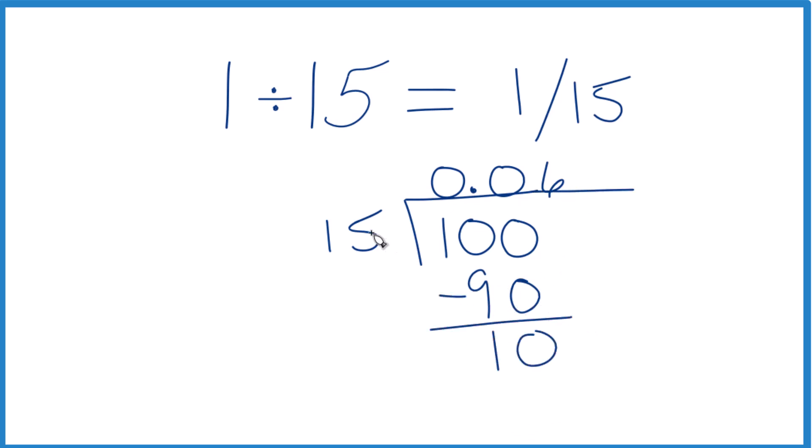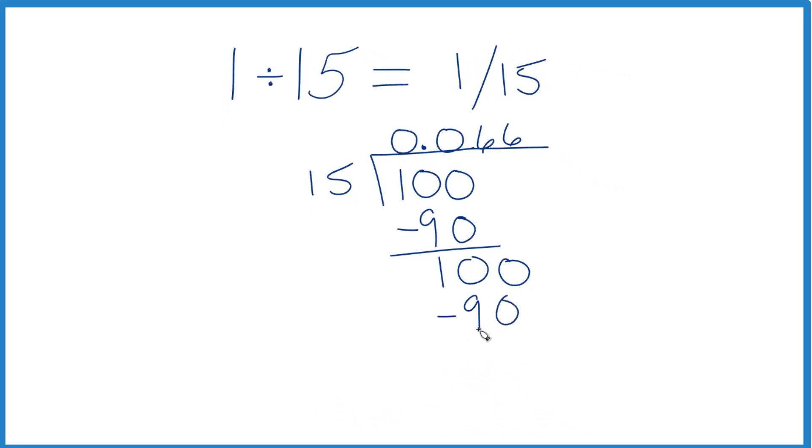So 15 doesn't go into 10. We'll call that 100, move over 1. 6 times 15 is 90. We subtract, we get 10. Call it 100, move over 1. 6 times 15 is 90. We subtract and get 10. And you see where this is going.